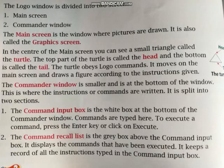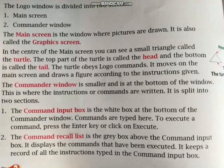We also learned the parts of the Logo window: title bar, menu bar, main screen, commander window, turtle, command recall list, command input box, and command buttons. The Logo window is divided into two screens — main screen and commander window. The turtle in the center moves according to commands and draws shapes. The commander window is split into command input box, where we type commands and execute them via Enter or the Execute button, and command recall list, which stores records of all commands performed.